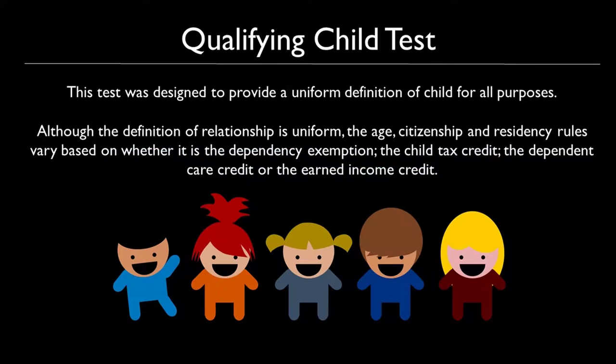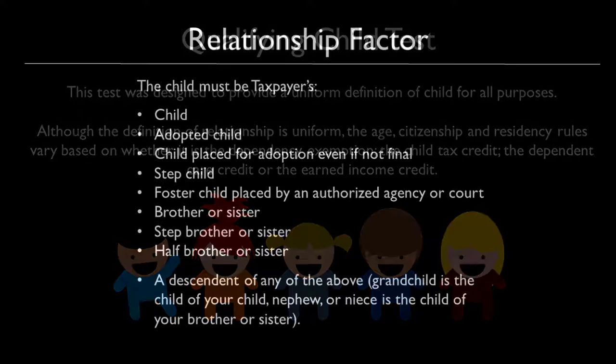Let's first go over the qualifying child test. This test was designed to provide a uniform definition of child for all purposes. Although the definition of relationship is uniform, the age, citizenship, and residency rules vary depending on whether this is a dependency exemption you are trying to qualify for, or you're looking at the child tax credit, the dependent care credit, or the earned income credit. For this purpose we're going to talk about these rules as they relate to the qualifying child test.